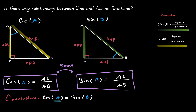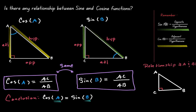Now let's think about whether there is any relationship between angle A and angle B. To show this relationship, let's draw a new right triangle. We know that angle A plus angle C plus angle B equals 180 degrees. Because this is a right triangle, angle C equals 90 degrees. Combining those two ideas, angle A plus angle B equals 90 degrees. If we move B to the other side, then angle A is equal to 90 minus angle B.